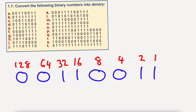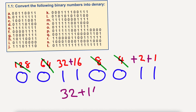We now need to add up all the numbers which have a 1 underneath. There are no 128s, no 64s, no 8s, and no 4s. So if I add these together — 32 plus 16 plus 2 plus 1, because this is where the 1s are underneath — 32 plus 16 is 48, plus 2 is 50, plus 1 is 51.